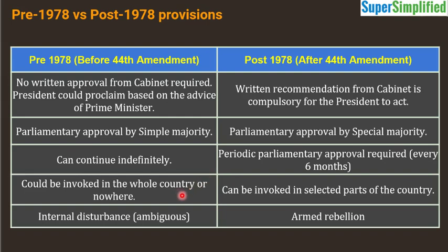These are the lessons learned from history — that's why this constitutional amendment was enacted. Before 1978, national emergency could only be invoked for the whole country or not at all. Now, according to current provisions, it can be invoked in selected parts of the country. Another provision that was changed: one of the three grounds was 'internal disturbance,' which was very ambiguous — any small event could be called internal disturbance. After the 44th Amendment, this was replaced with the specific phrase 'armed rebellion.'